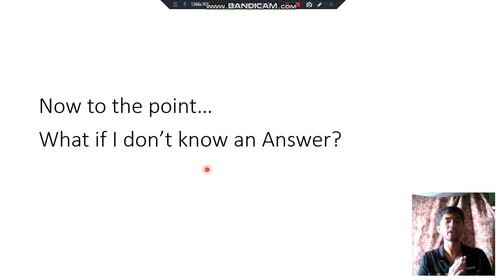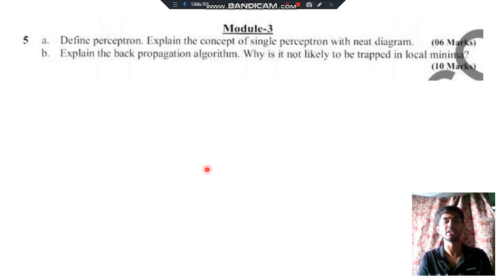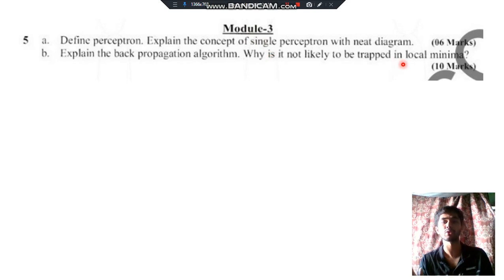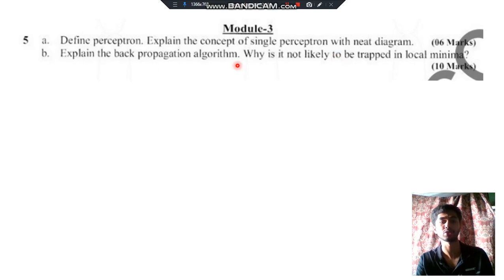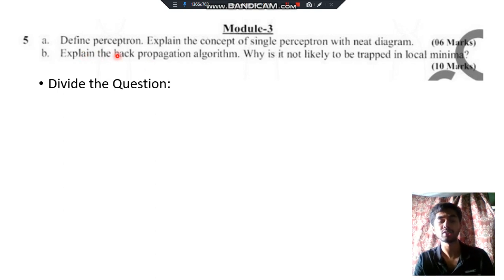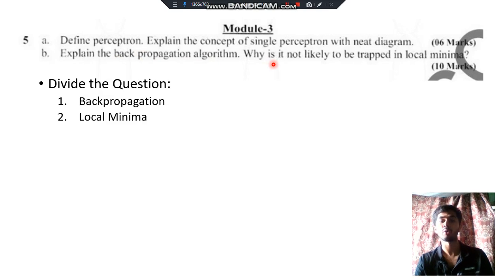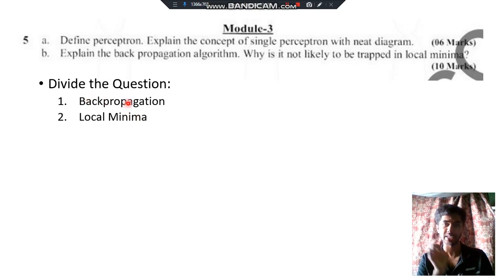Now, what if you don't know the answer? Take the same example: 'Explain the backpropagation algorithm.' You have no idea what backpropagation is — you just know it's from module 3 because it's written on the question paper. You can still easily score at least 50 percent of the marks. Listen to the step-by-step process: divide the question into two parts. First, what is the backpropagation algorithm? Second, why is it not likely to be trapped in local minima? Take one keyword from each part and explore it.